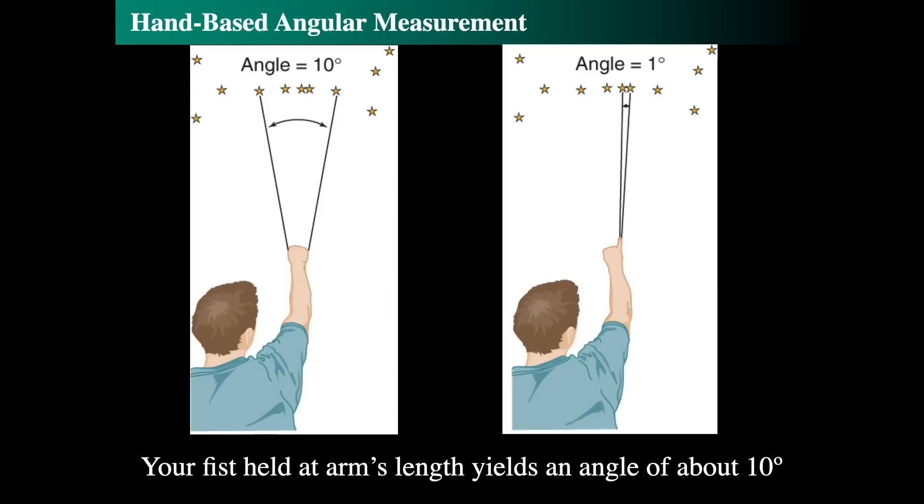For smaller angular measurements, we can use our pinky held at arm's length. Close one eye, hold your pinky at arm's length, and two stars separated by your pinky are about a degree apart. Your hand can act as a 10 degree thing for a fist, your little finger is about 1 degree across. For an open octave, separate your thumb and pinky as far apart as you can, and that is about 15 degrees.